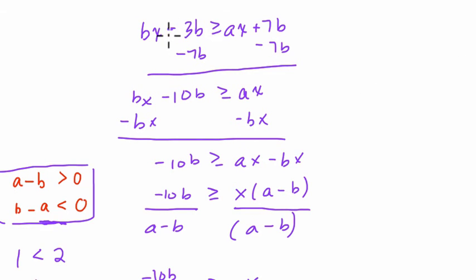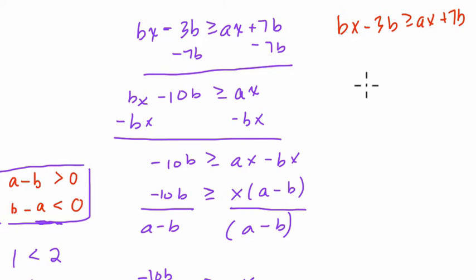Let's say you, instead of subtracting 7b from both sides, if you added 3b to both sides. So bx minus 3b, greater than or equal to ax, plus 7b. I'm just rewriting it. Now we add 3b to both sides. So let's just watch what happens here.